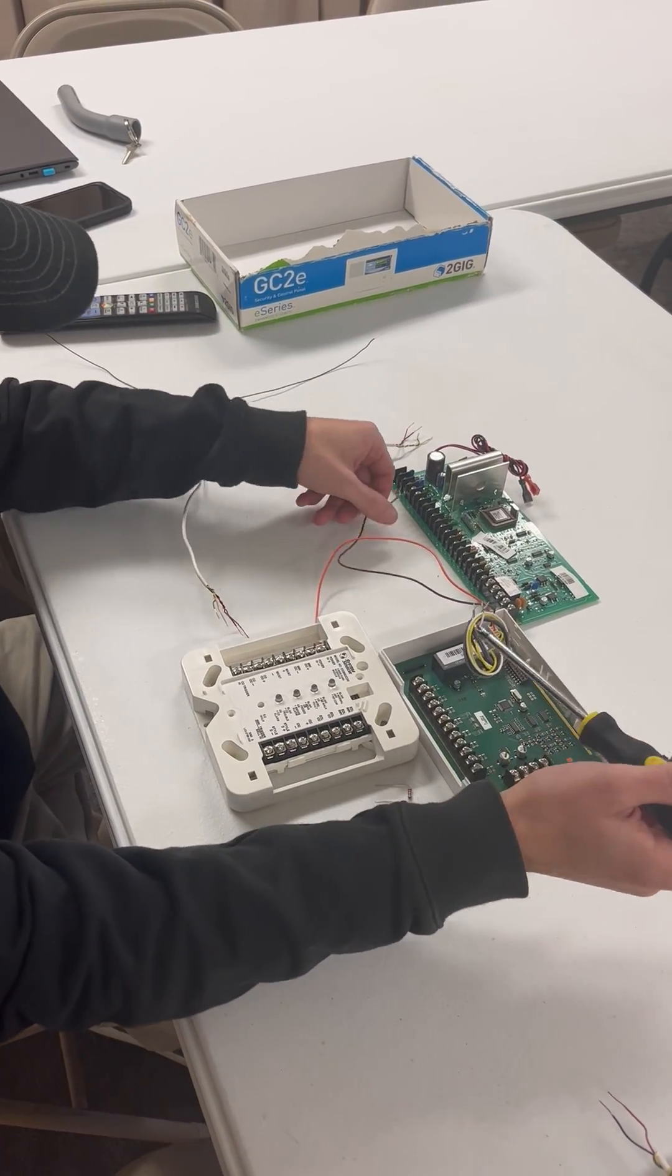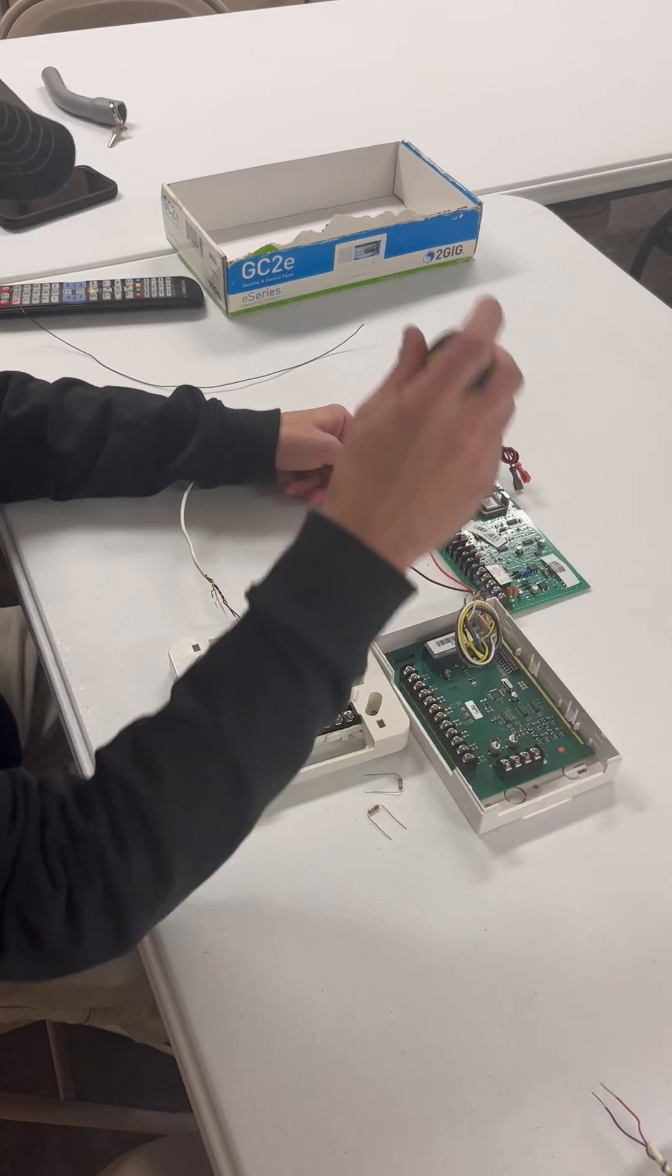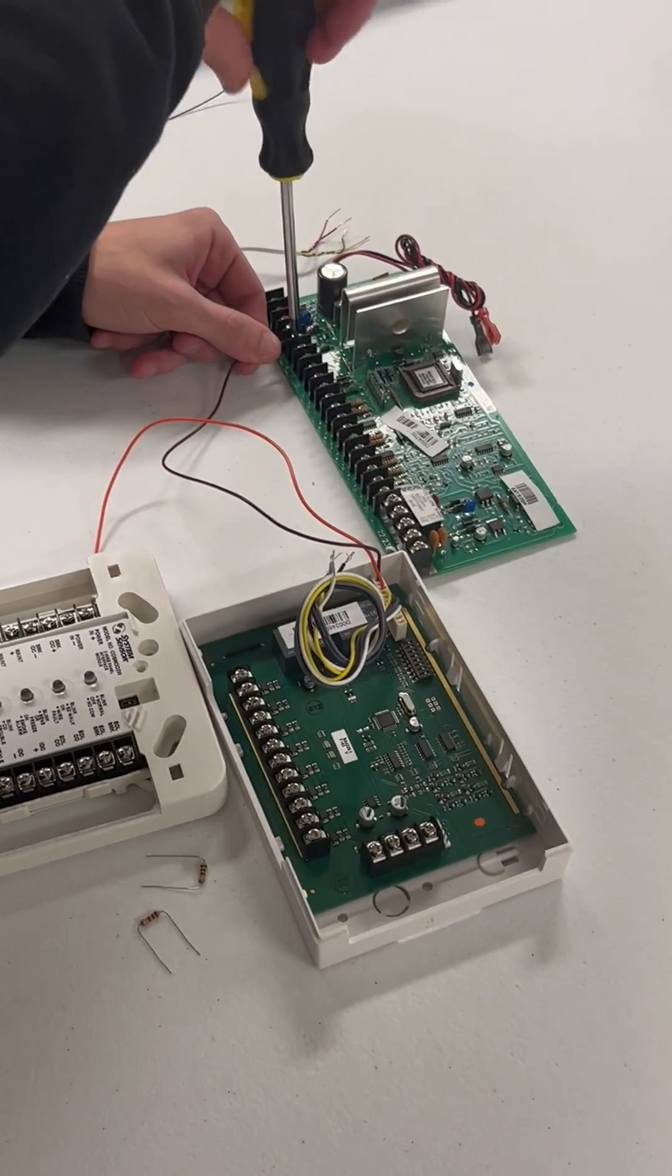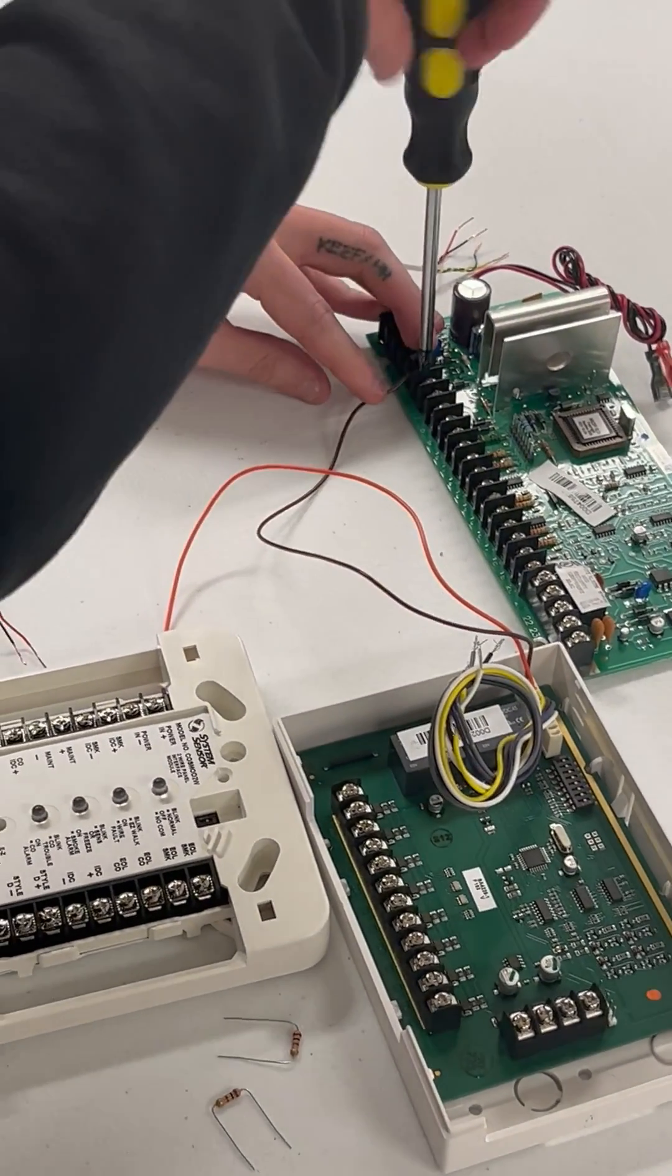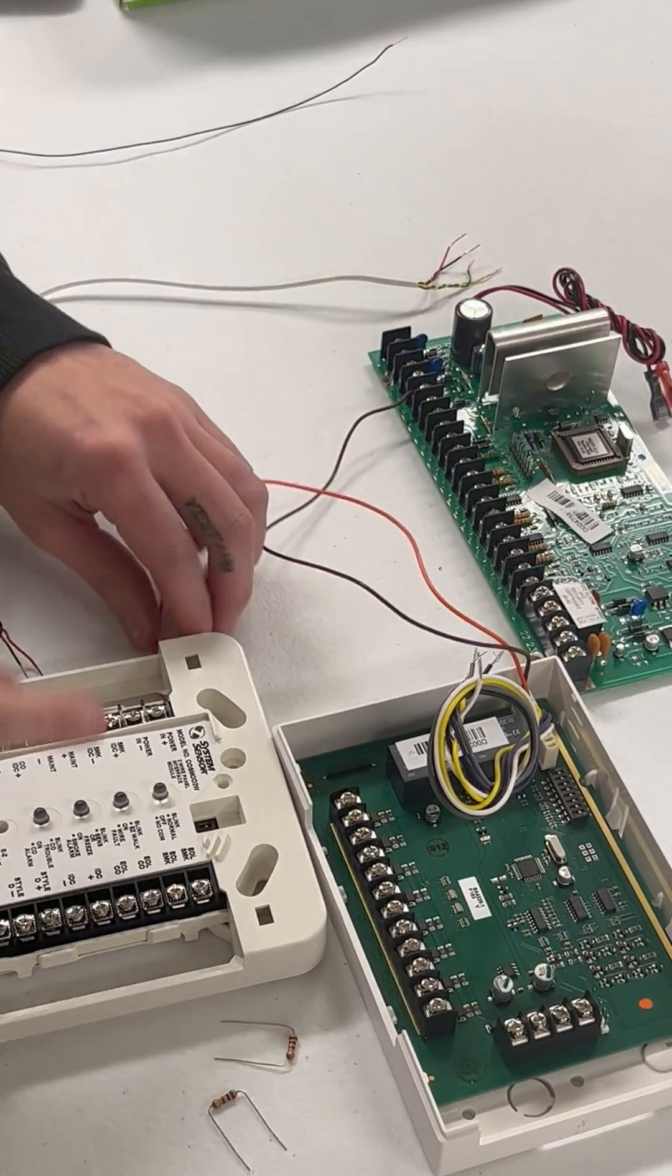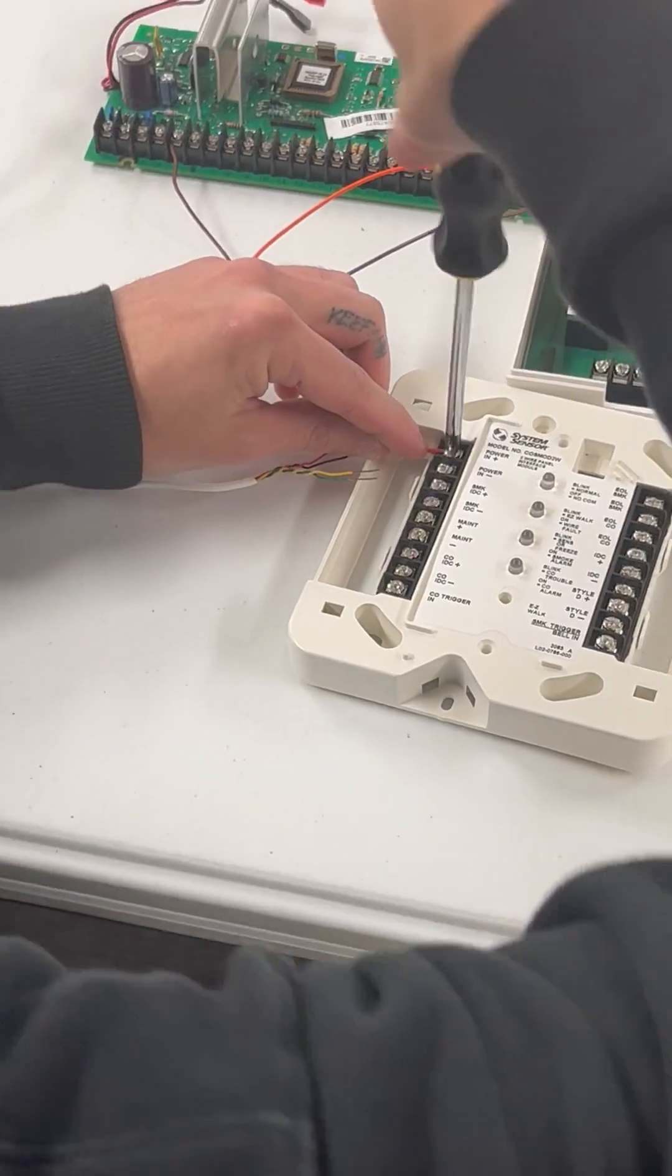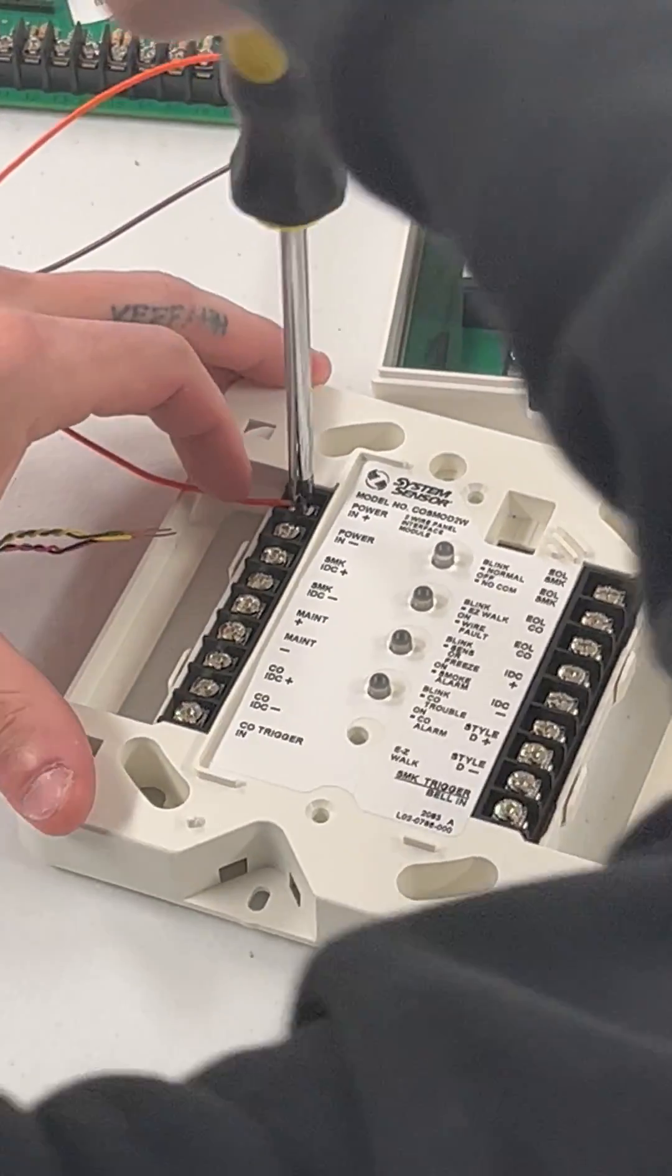We're going to start with our relay. We're going to wire the relay into our positive power coming out from the panel which is terminal five and we're going to go into the power in positive on the cosmod. The relay is what drops the power to the smoke detectors causing them to reset.